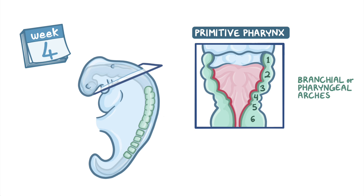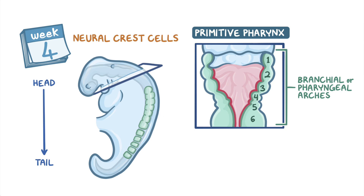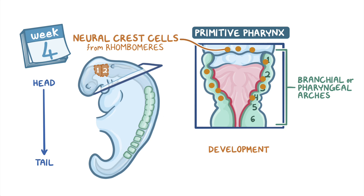These arches are paired, symmetrical bumps that form on each side on the lateral aspect of the embryo, in a craniocaudal fashion going from head to tail. At the same time, neural crest cells from the midbrain and the first two rhombomeres migrate bilaterally to the region and infiltrate the mesoderm bumps, where they support the development of embryonic connective tissue needed for craniofacial development, called ectomesenchyme.